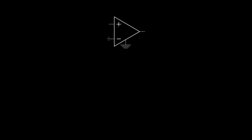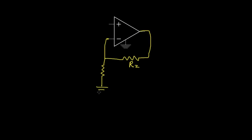Now let's take a look at another op amp circuit. For this circuit, as with the previous one, I'm going to take the output and feed it back through a resistor to the negative input terminal, and assign that feedback resistor a value of R2. I'm also going to connect the negative input terminal through another resistor to ground and call that resistance R1.